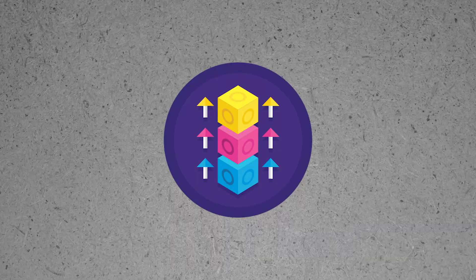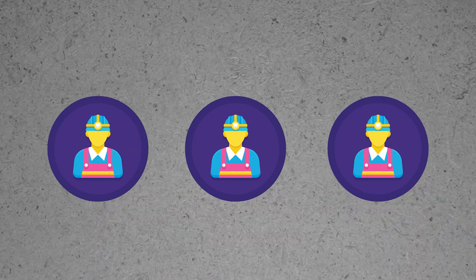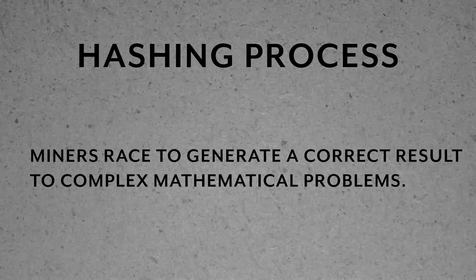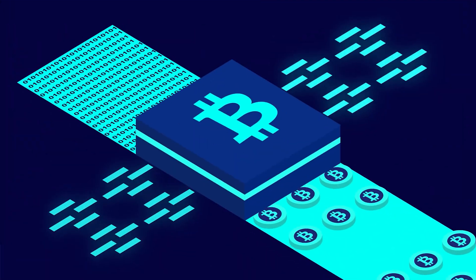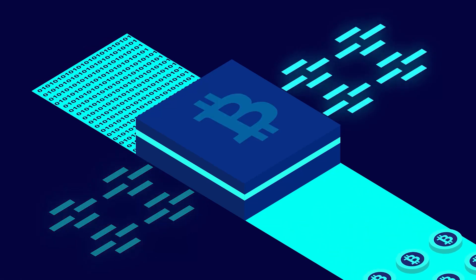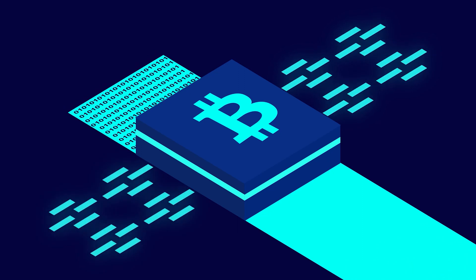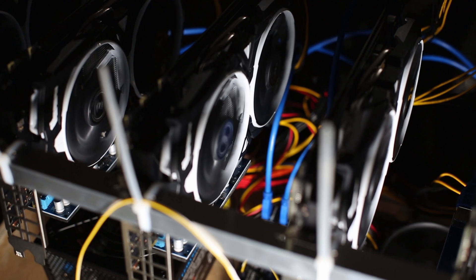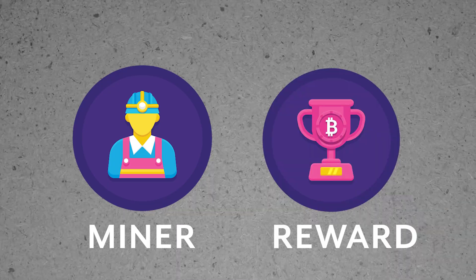In order to create a new block, miners on a proof of work network compete against each other to solve complex mathematical problems in a process called hashing. During the hashing process, miners race to generate a correct result to complex mathematical problems. Miners guess a string of numbers called a hash, which when combined with the data provided in the block and passed through a hash function, must produce a result matching the conditions set by the protocol. The winning hash is then broadcasted for other miners to verify. If it is correct, the block gets added to the blockchain and the miner is compensated with a block reward — in Bitcoin's case, rewarded in Bitcoin.